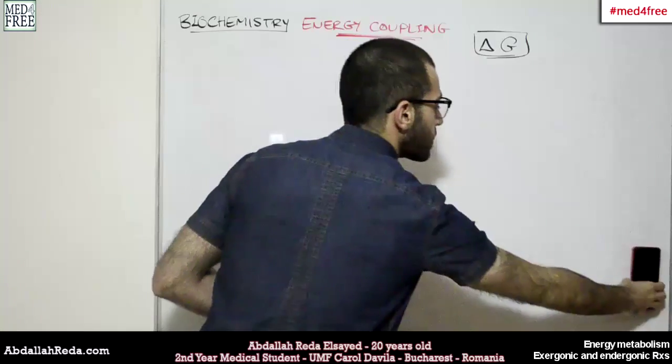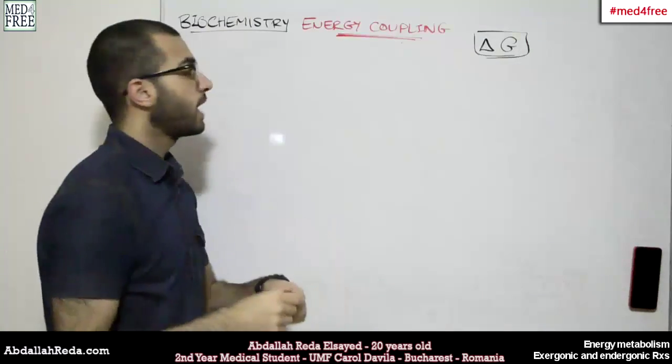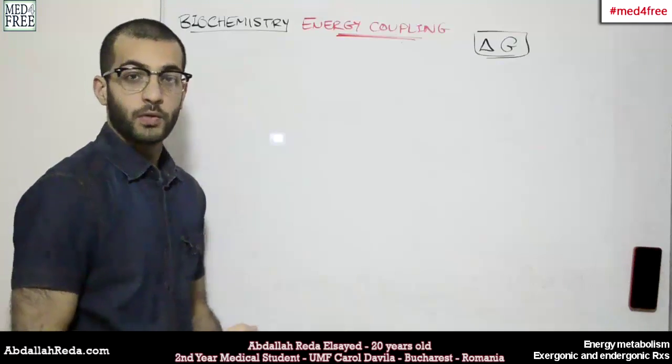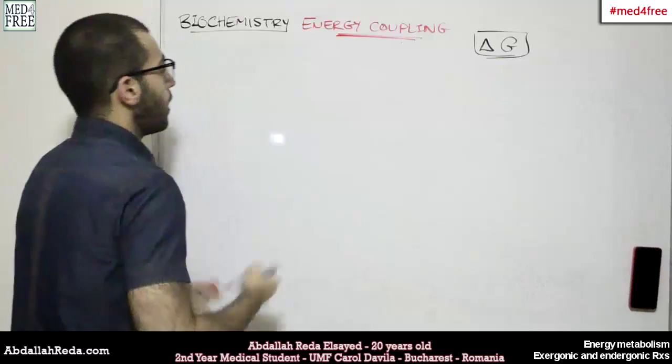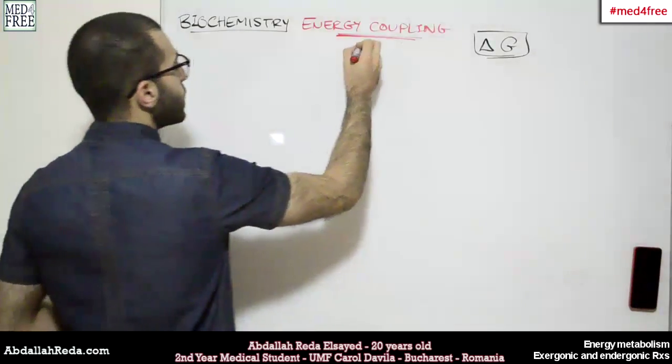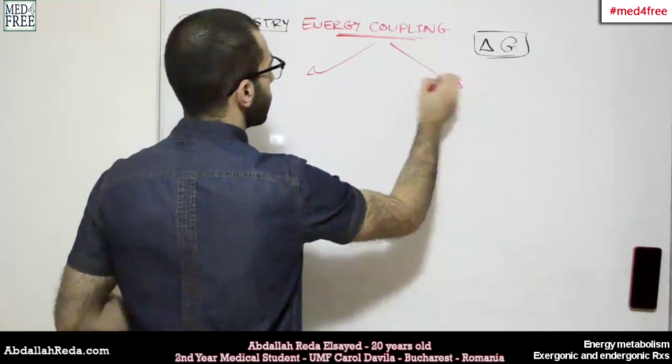We can sum up the free energies of two related chemical reactions and get the total free energy. And so energy coupling actually can be of two types.